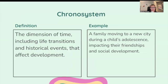Chronosystem: the dimension of time, including life transitions and historical events that affect development. For example, a family moving to a new city during a child's adolescence, impacting their friendships and social development.